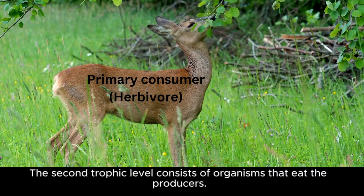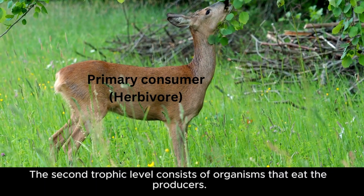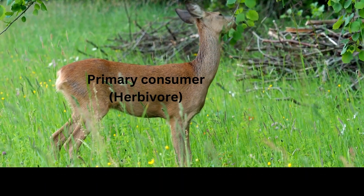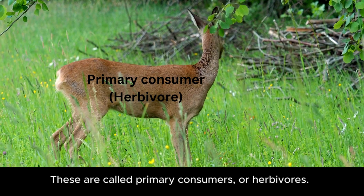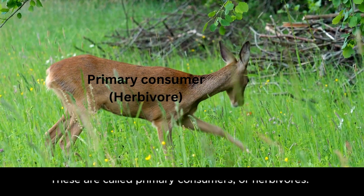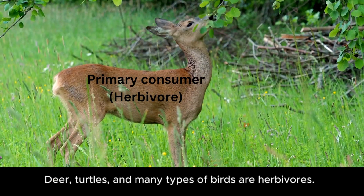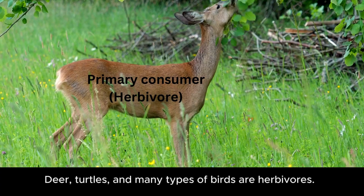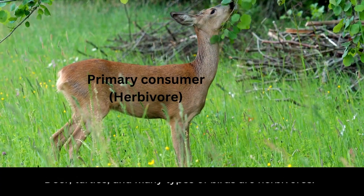The second trophic level consists of organisms that eat the producers. These are called primary consumers or herbivores. Deer, turtles, and many types of birds are herbivores.